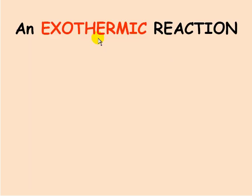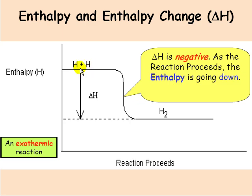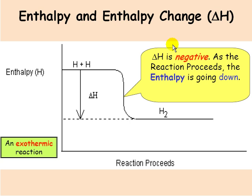Let's consider an exothermic reaction. This is one that releases heat to the surroundings. Here's a graph of enthalpy versus the progress of the reaction. This is the beginning of the reaction where you have the reactants, and this is the end of the reaction where you have the products. For this exothermic reaction, as the reaction proceeds, you'll notice that the enthalpy goes down, so we say that delta H is negative.